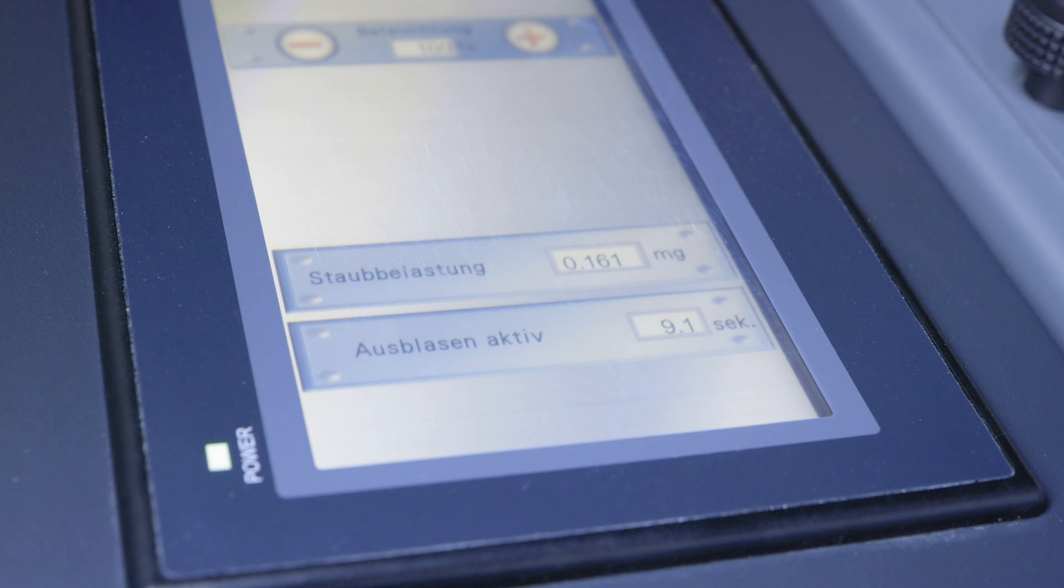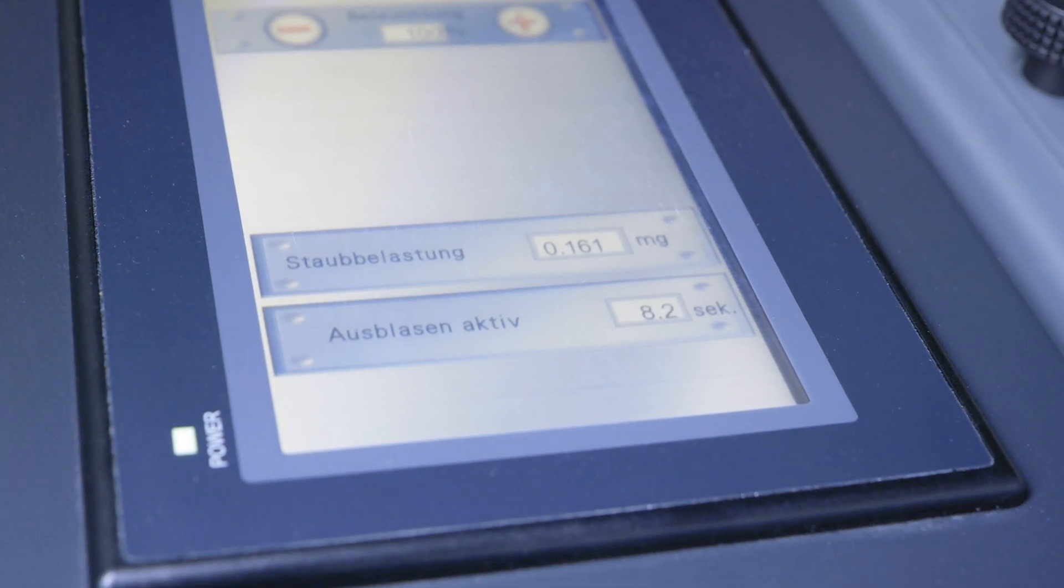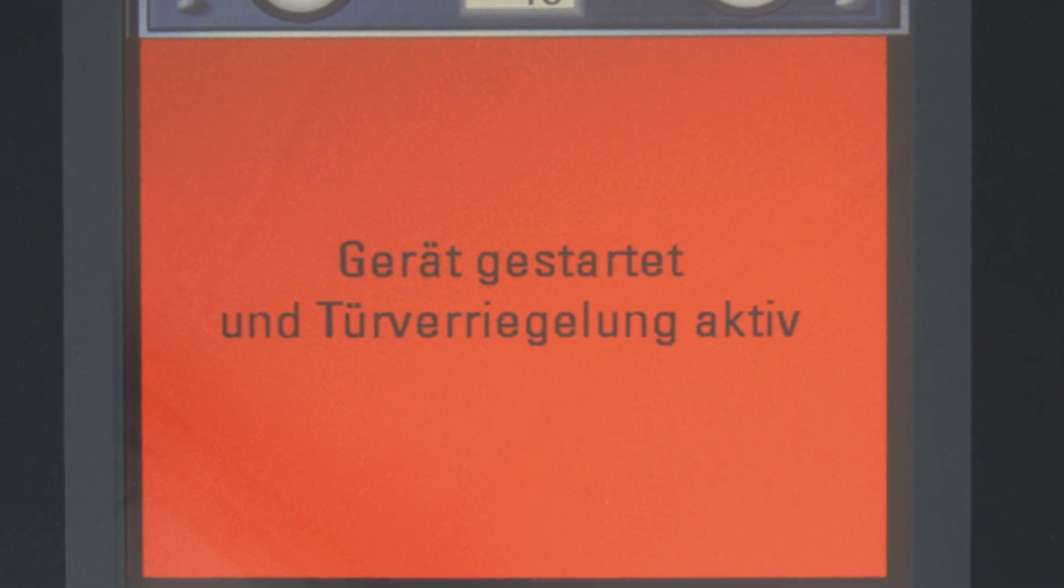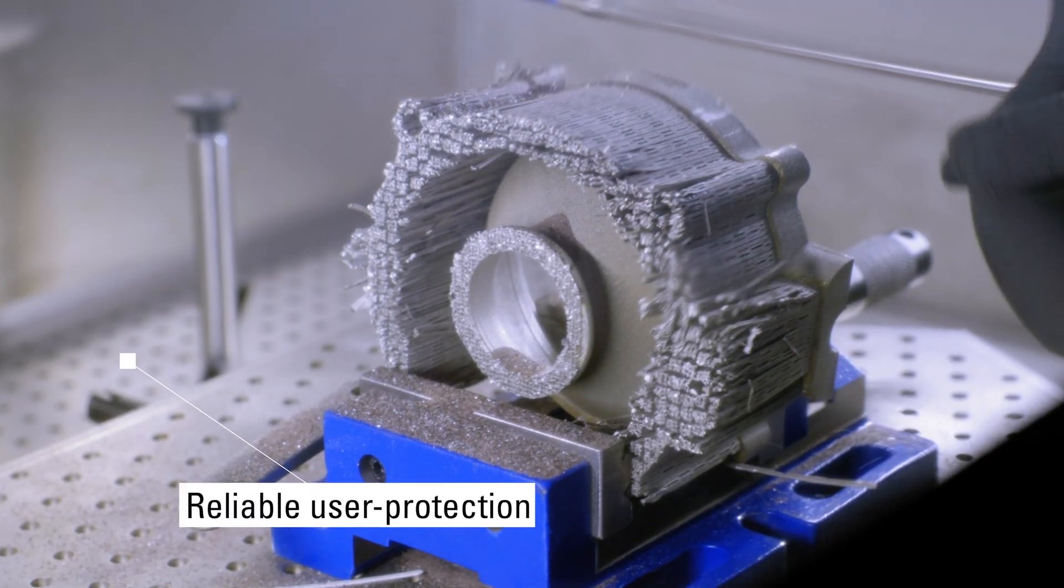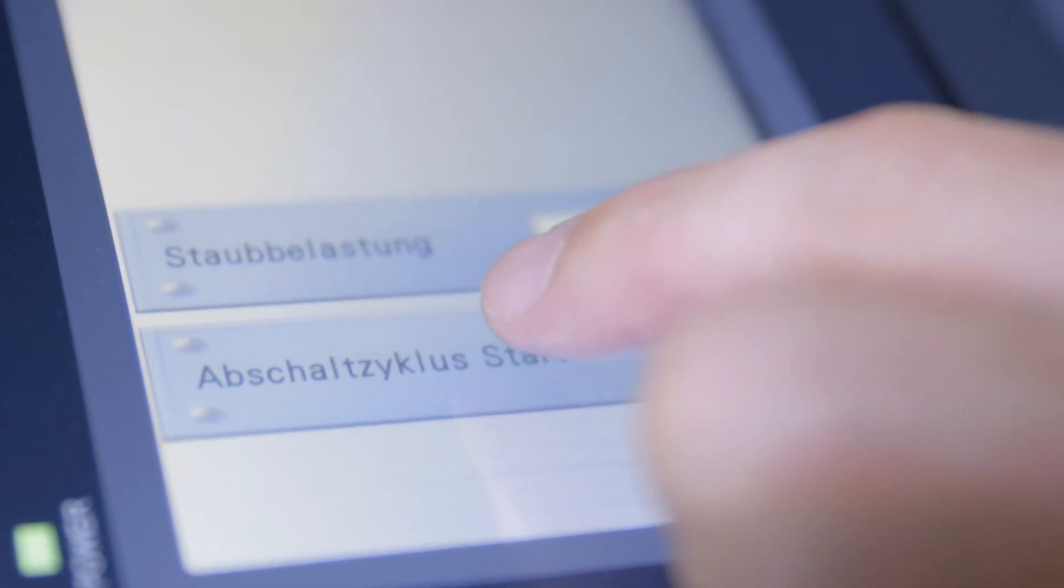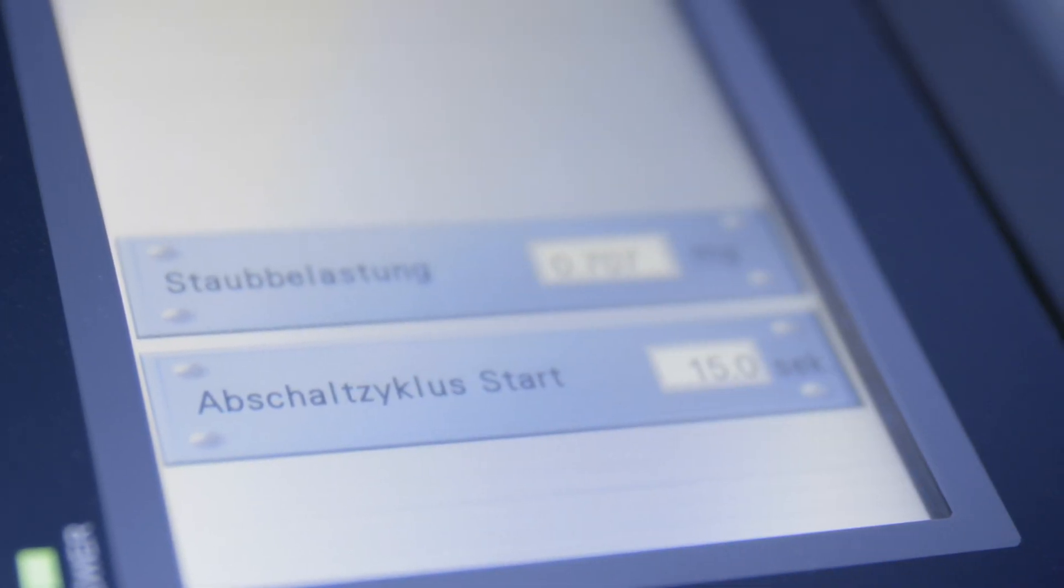To ensure that users cannot come in contact with fine dusts and powder residues while reworking, the system locks during use. At the same time, the air in the work chamber is continuously extracted. Once the work is finished, a special cleaning process is activated.